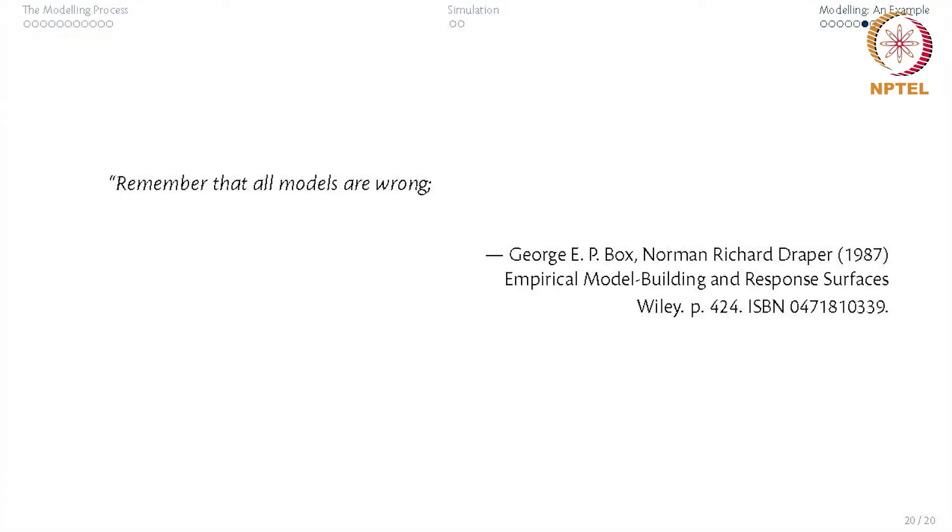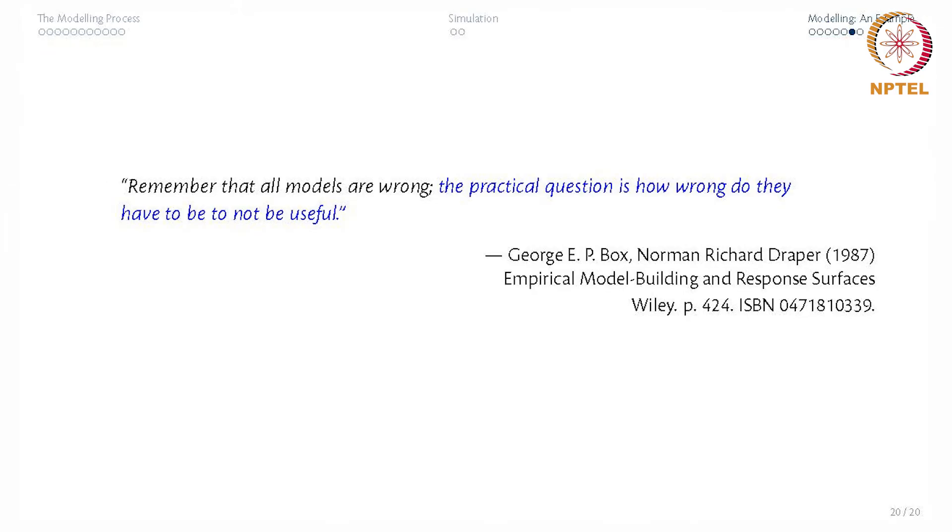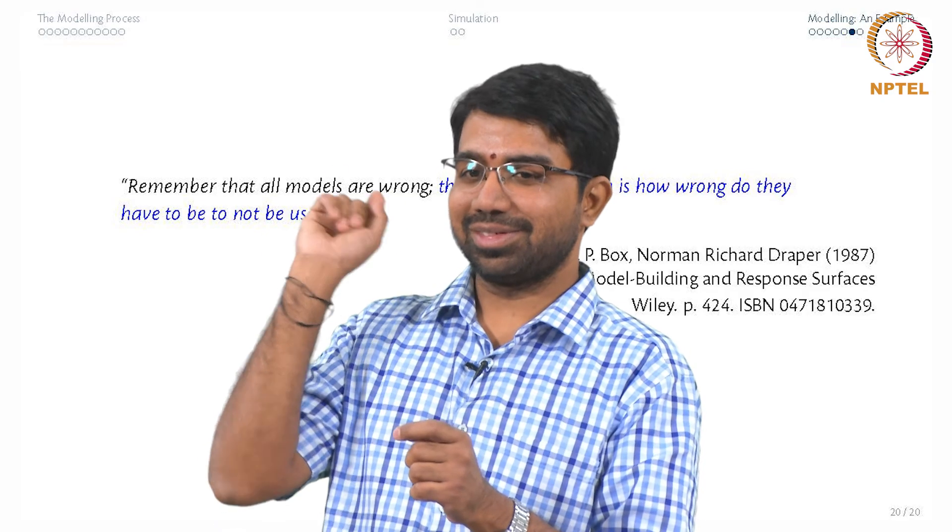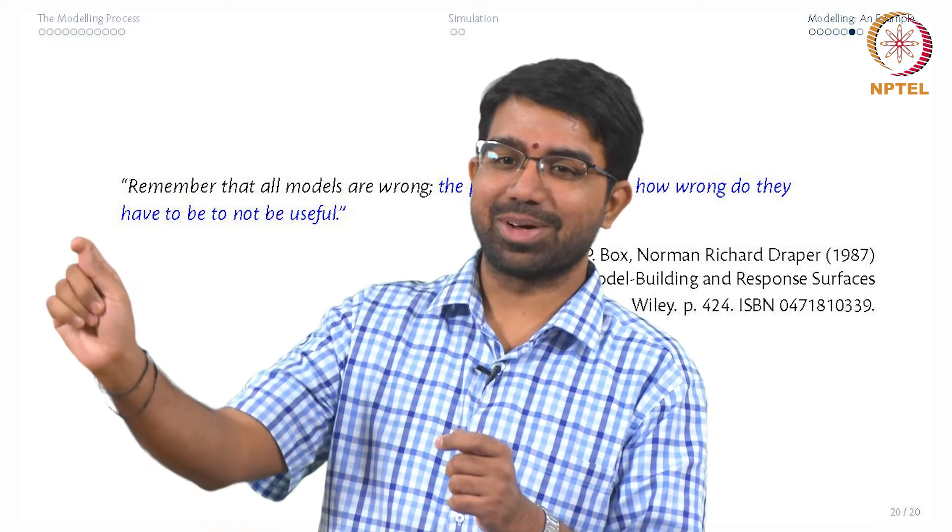First rule for a model. Remember that all models are wrong, but although the sentence is a little complex, so the question is they are all useful. How useful is a model? My favourite example is one a colleague gave is that you can assume earth and moon as point objects and you know have Mangalyaan that actually reaches Mars on time.